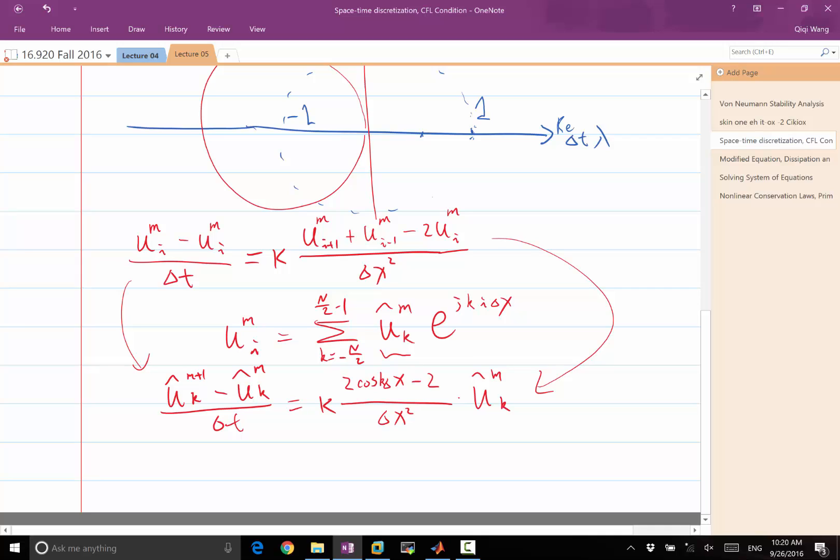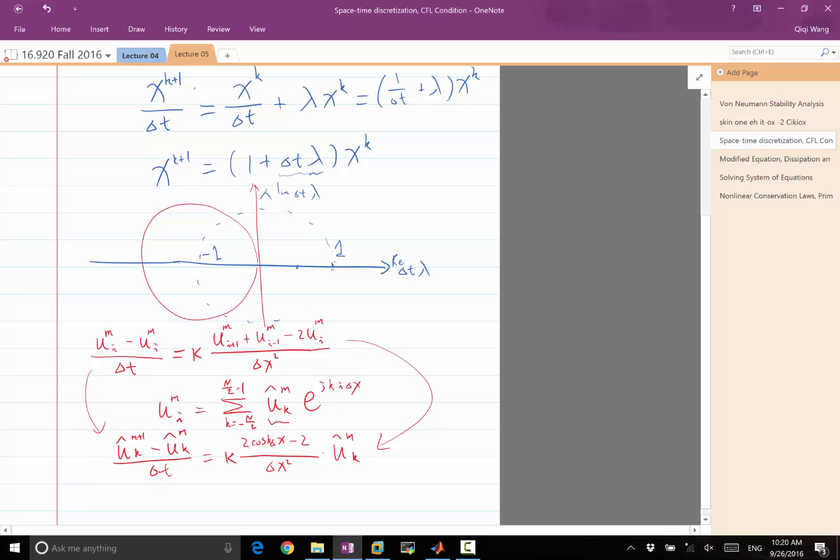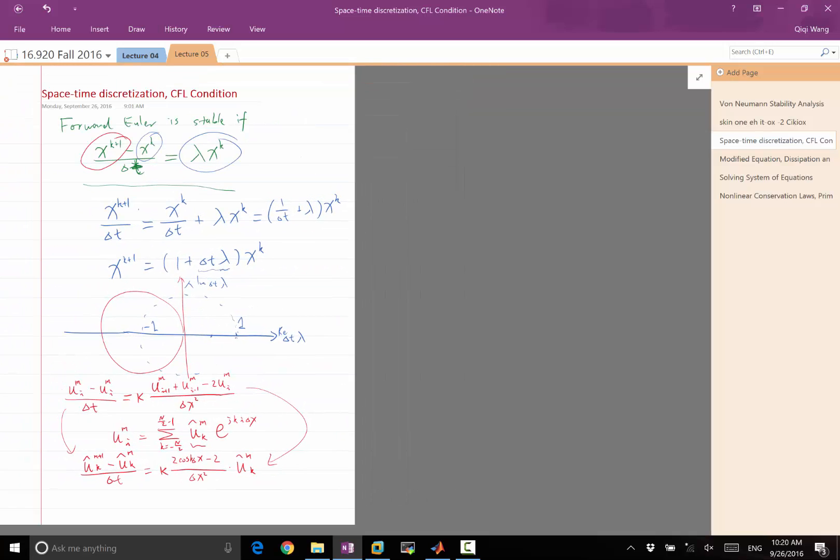Can somebody tell me in what cases is this equation stable? In what cases is the space-time discretization stable? We're doing pretty much the same thing, except for we have something more complex over here.